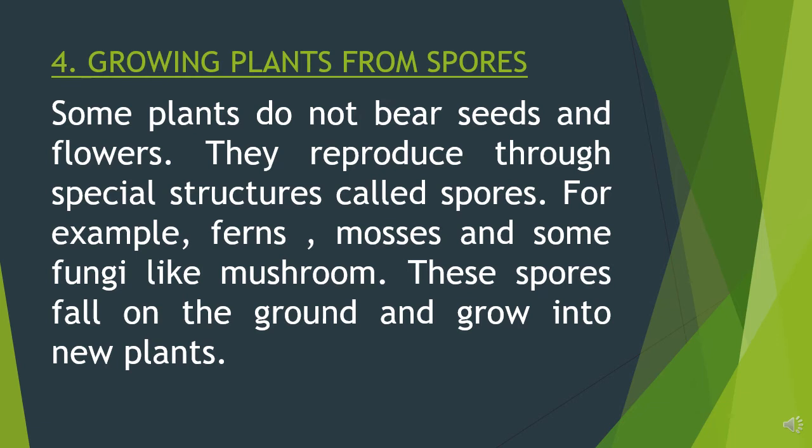Examples of plants that grow from leaves are bryophyllum and begonia. Number 4: growing plants from spores. Some plants do not bear seeds and flowers; they reproduce through special structures called spores. For example, ferns, mosses and some fungi like mushrooms — these spores fall on the ground and grow into new plants.